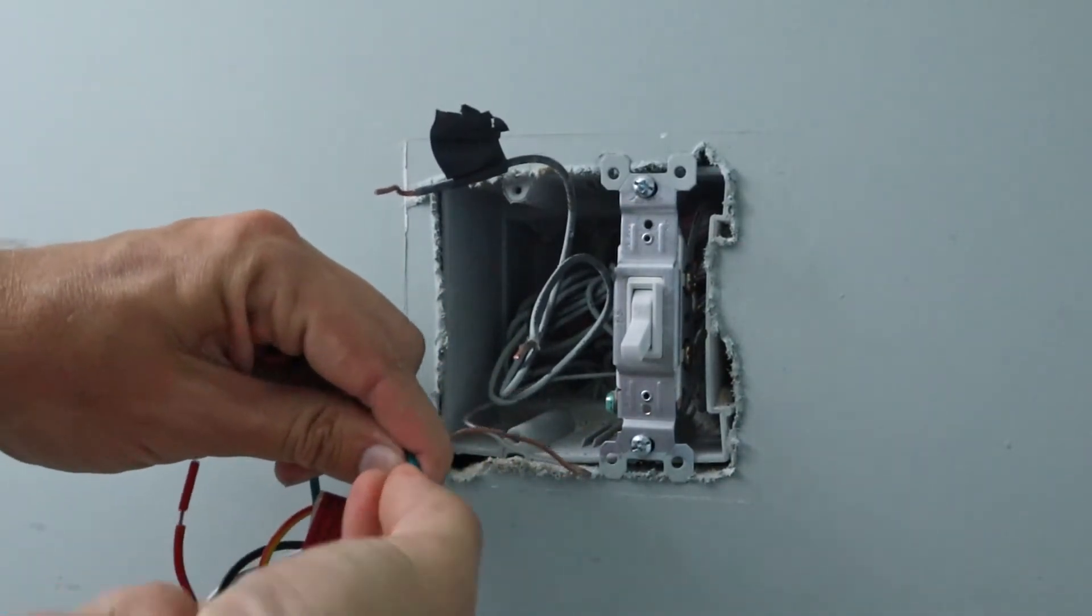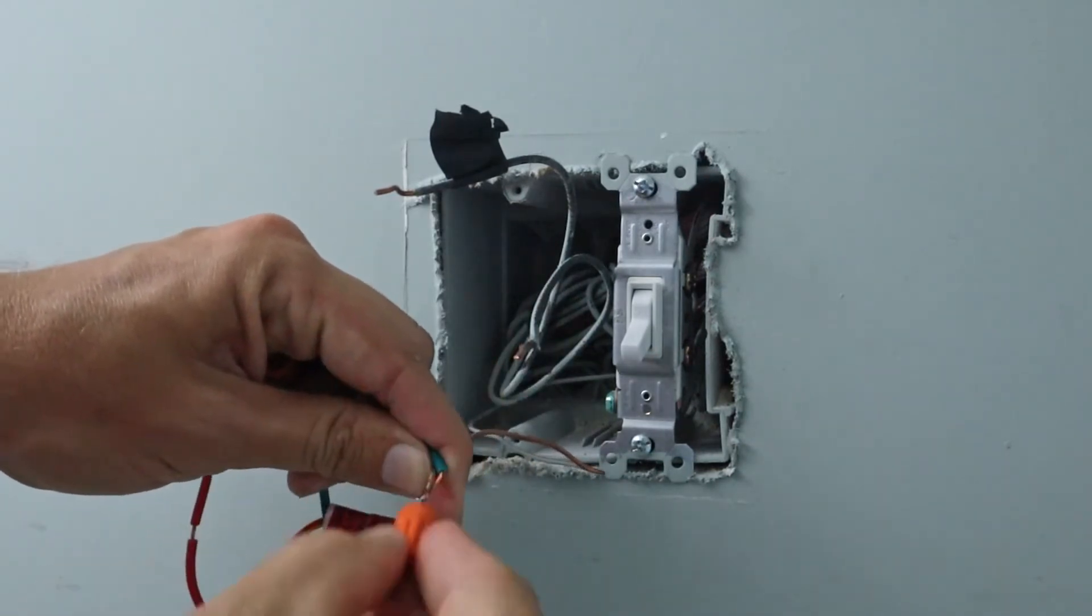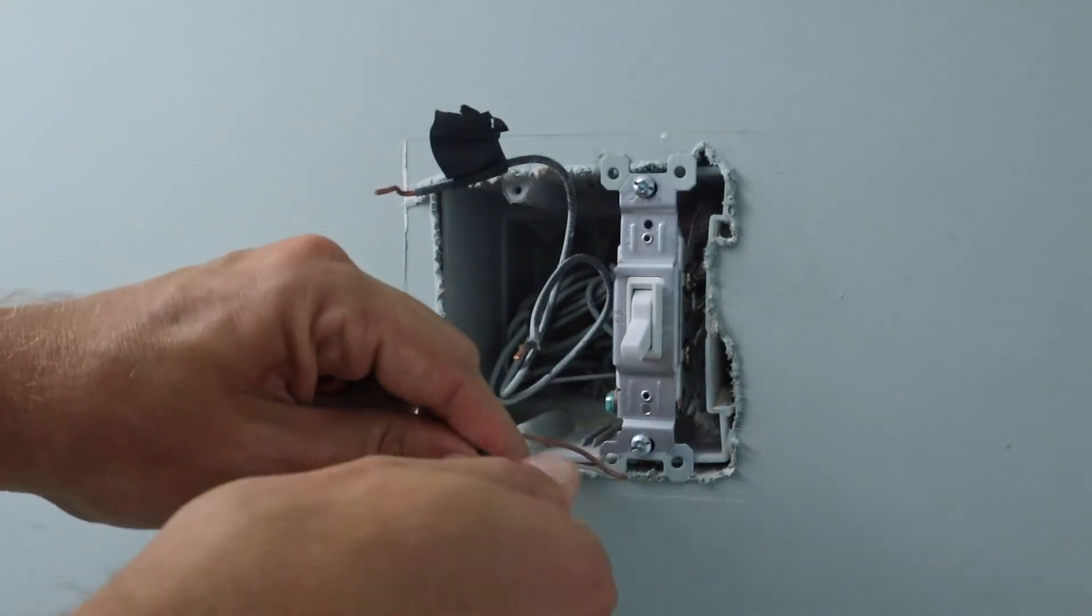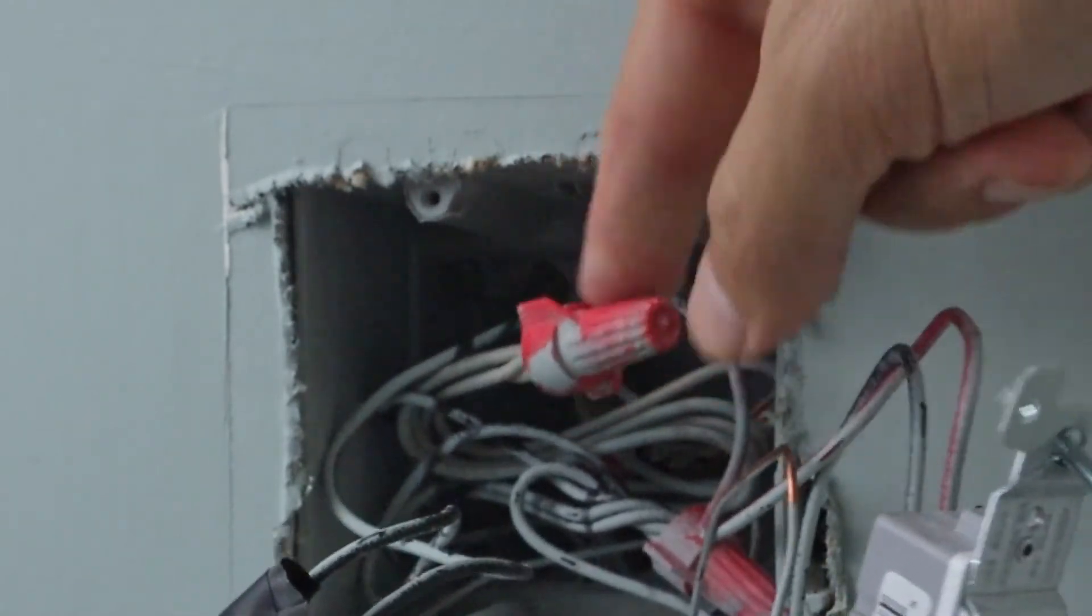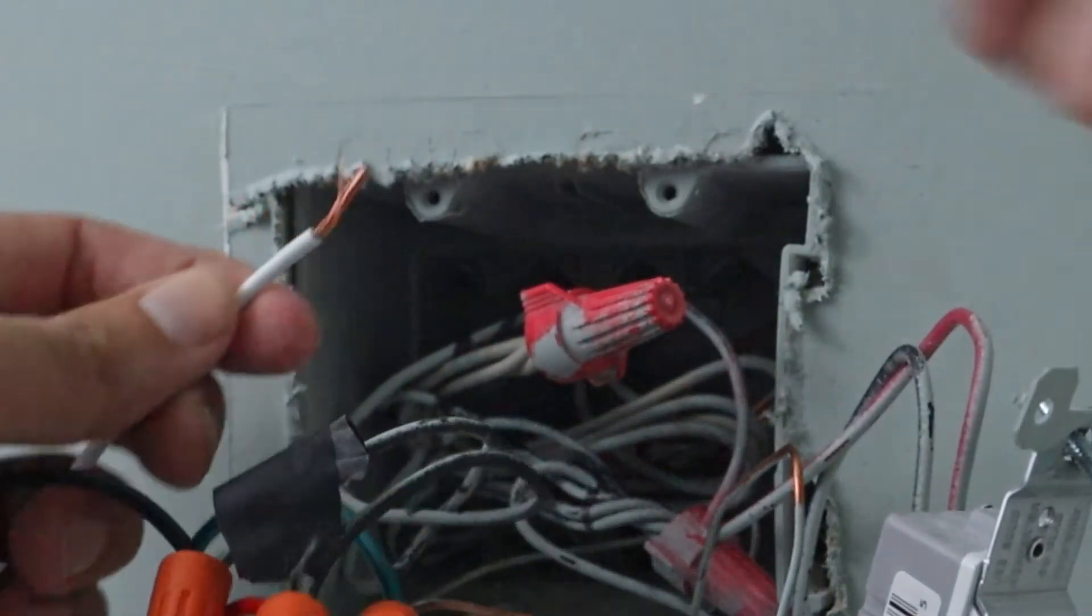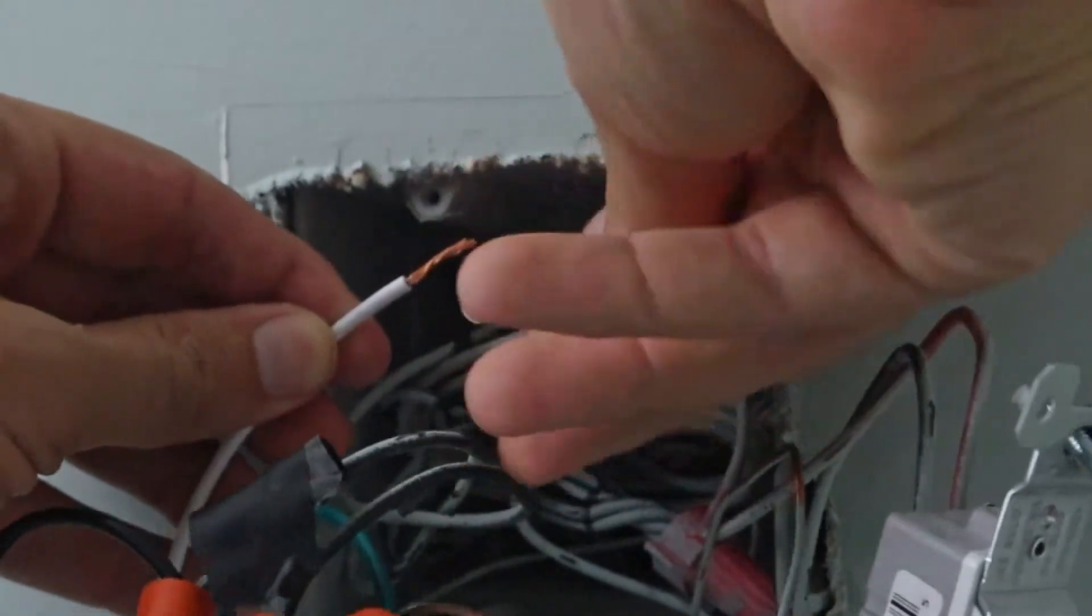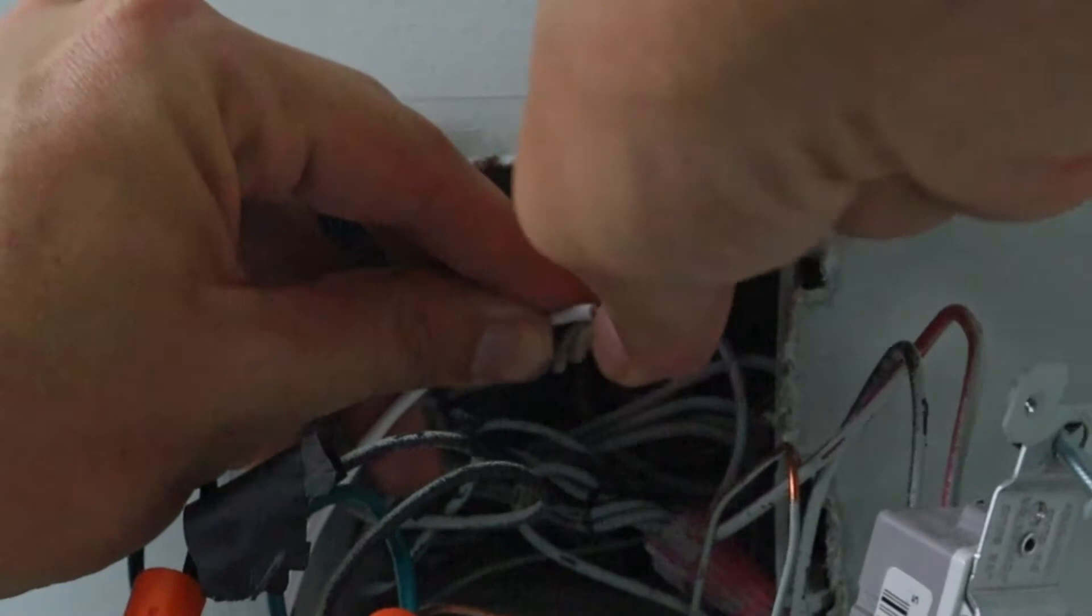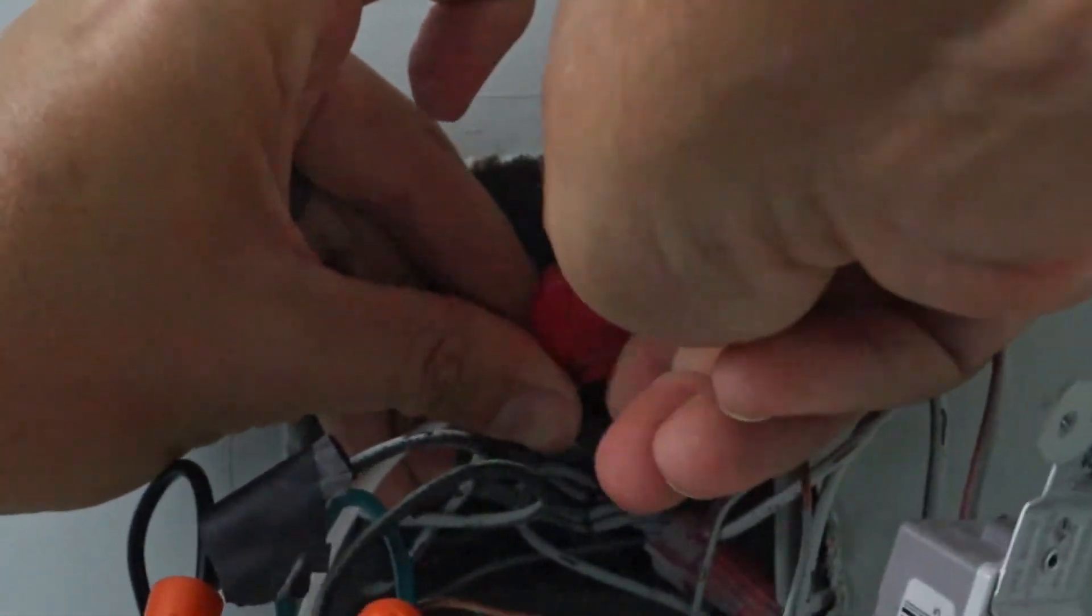You just want to start by twisting it onto the wire, then you'll take a wire nut and put it on top and screw it together. All right, so here is our group of white neutral wires. All we're going to need to do is take this white neutral wire from the switch, remove the wire nut from the bundle of neutral wires, and then twist that on with the bundle and reattach the original wire nut.